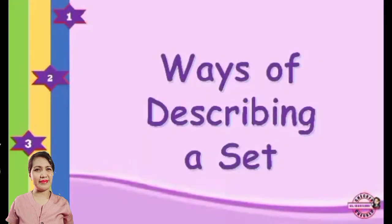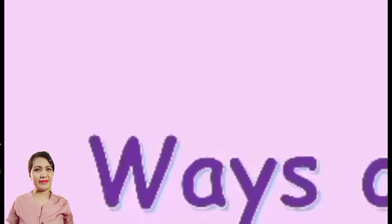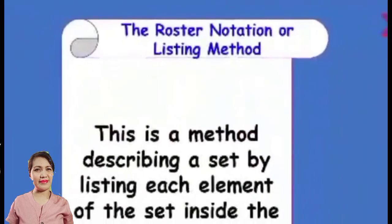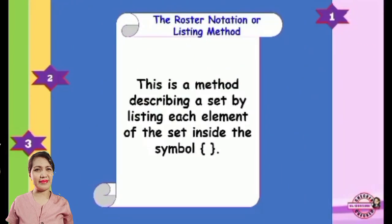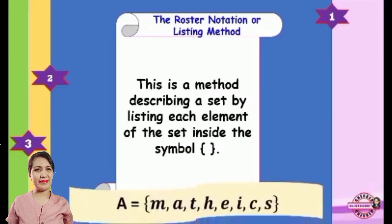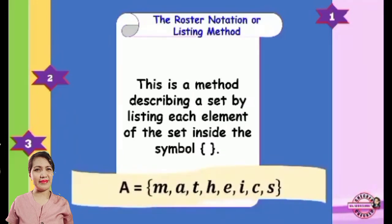Ways of Describing a Set. We have three ways of describing a set. First, we have the Roster Notation, or what we call the Listing Method. This is a method of describing a set by listing each element of the set inside the symbol braces. For example, Set A is composed of elements M, A, E, H, E, I, C, S.